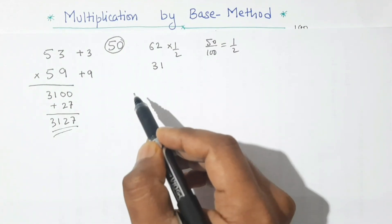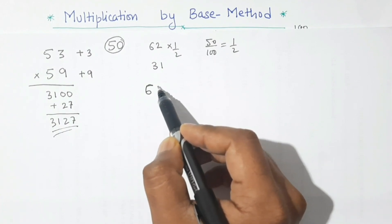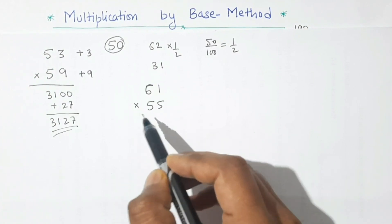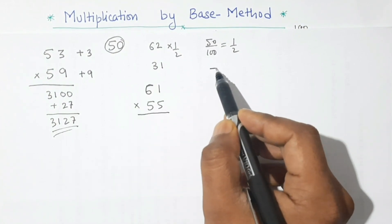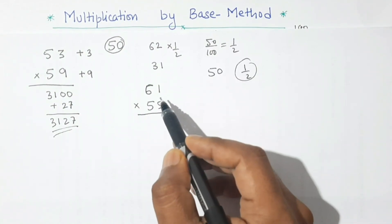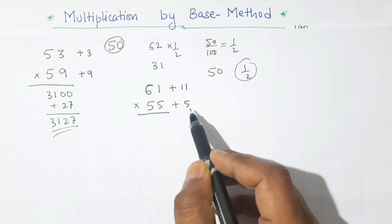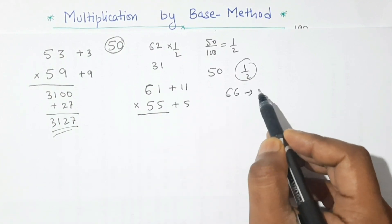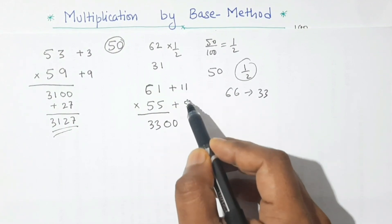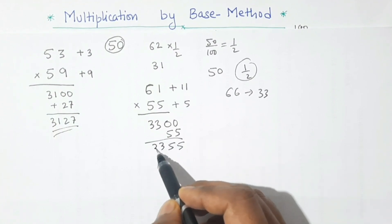Now let us take another example: 61 and 55. Here also we take base 50, which is half of 100, so our ratio is half. 61 is 11 more than 50 and 55 is 5 more than 50. So 61 plus 5 is 66; half of 66 is 33. We write 33 with two zeros, giving 3300. Then 11 × 5 = 55. Our product is 3355.